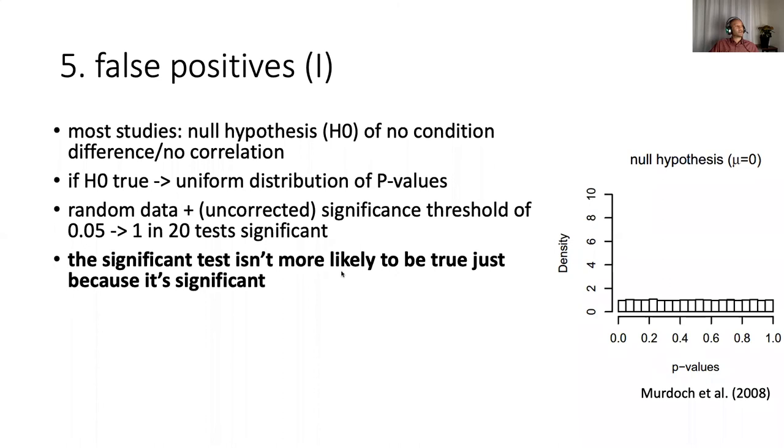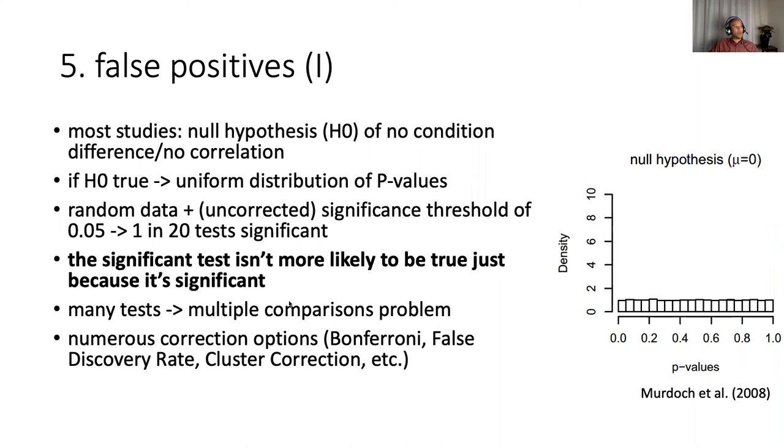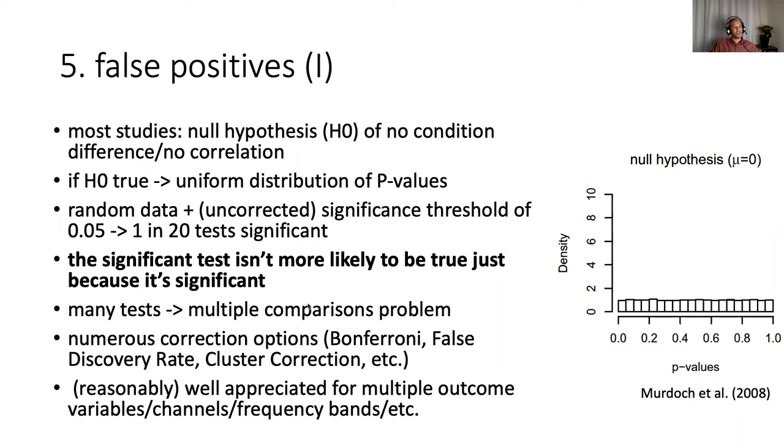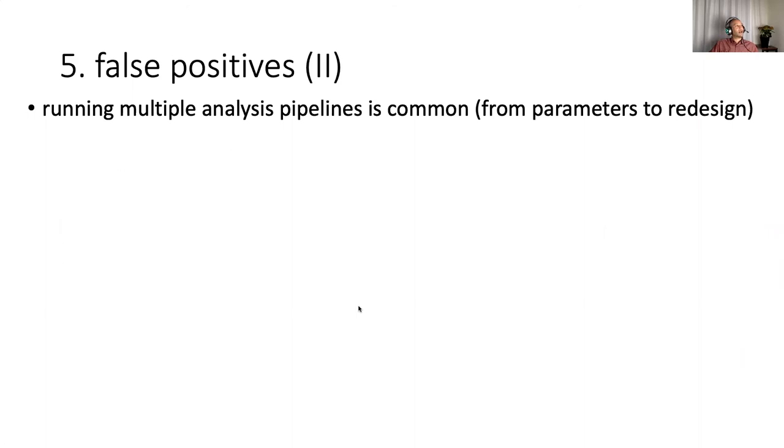And just to stress, I hope it's obvious that in this case where we know we started with random data, the significant test isn't more likely to be true just because it's significant. So whenever we run multiple tests, we have this multiple comparisons problem, and there's many ways of correcting for this. This type of issue is at least reasonably well appreciated when it comes to multiple outcome variables, different channels, different frequency bands, and things like that. Unfortunately, I don't think that false positives that concept is often applied to the notion of running multiple analysis pipelines.